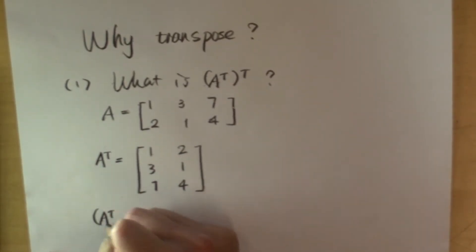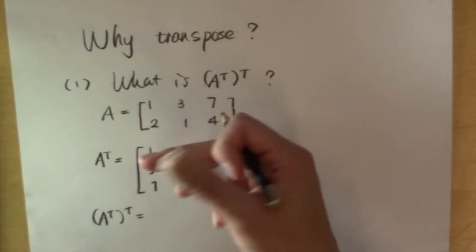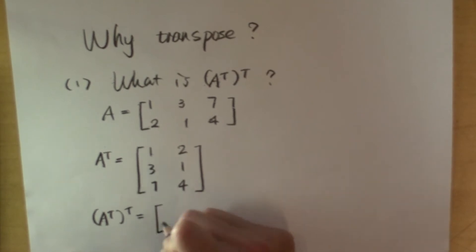So it's 1, 3, 7. The second row is going to be the second column transposed. So 2, 1, 4.